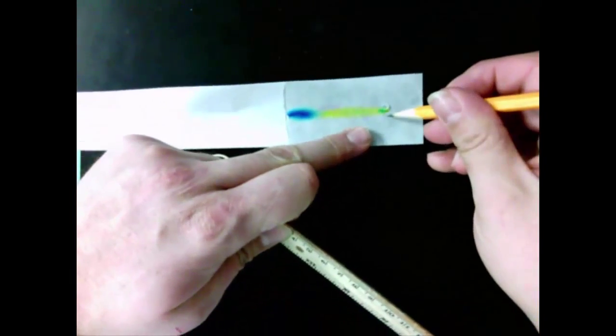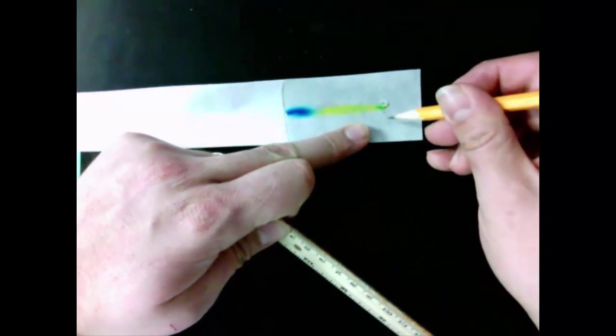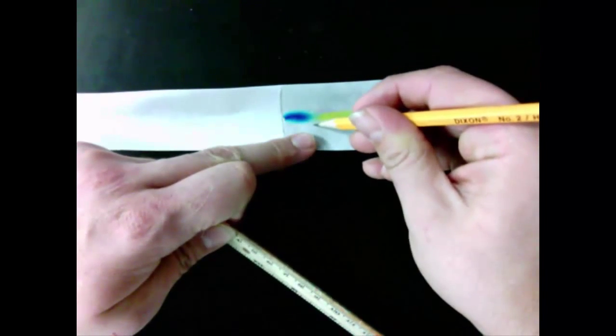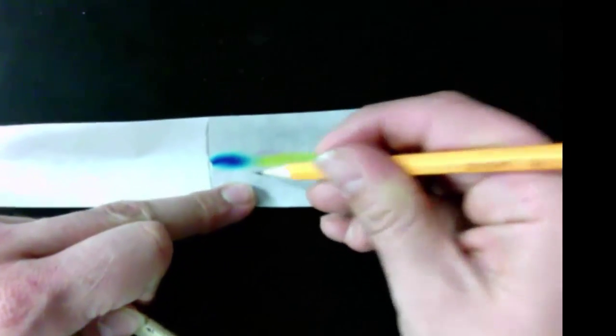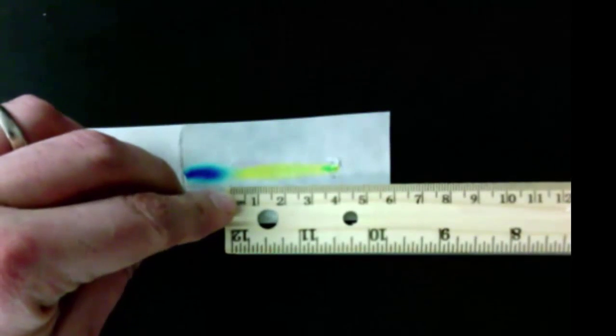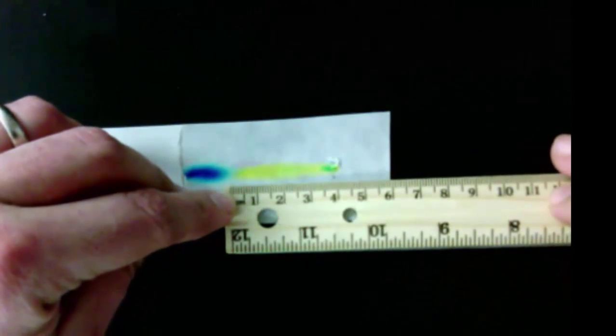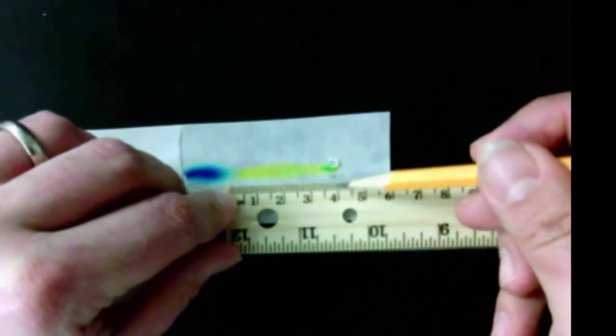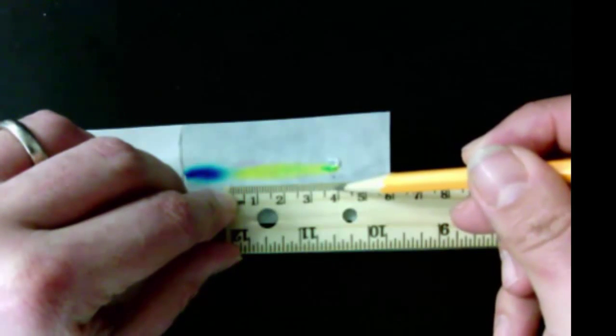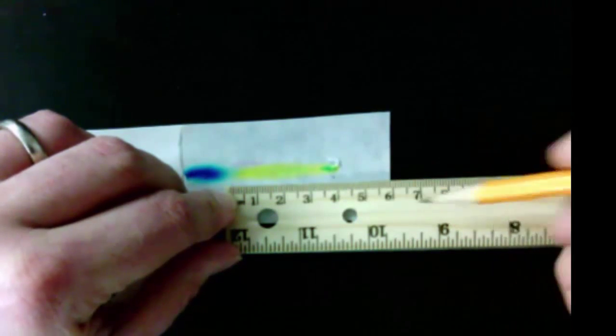I'm going to measure in centimeters, so I need to be careful. I'm going to take, for example, pretty much right at about the middle of where the origin is to about where the yellow ends. That's my estimation and I'm going to measure that in centimeters. And remember that we measure in centimeters, so we need to include hundredths. So that's 3.7, I'm going to say 3.79 for that one.